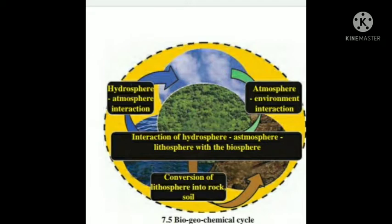The biogeochemical cycle operates through the media of the biosphere, which is formed by the lithosphere, hydrosphere, and atmosphere. The recycling of the chemical, geological, and biological sources of nutrients is a complex process and is completely dependent upon the transfer of energy levels in the ecosystem.